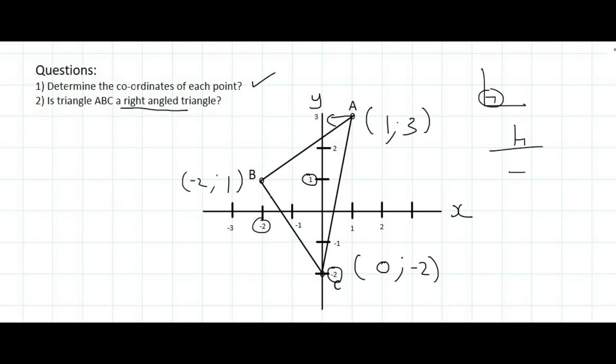So if you had to look at triangle ABC, where does it appear that the right angle, or the 90 degree angle, could be? Well, obviously it's over here at B. It appears that these two lines are 90 degrees, but we're not 100% sure. We need to try and work that out.